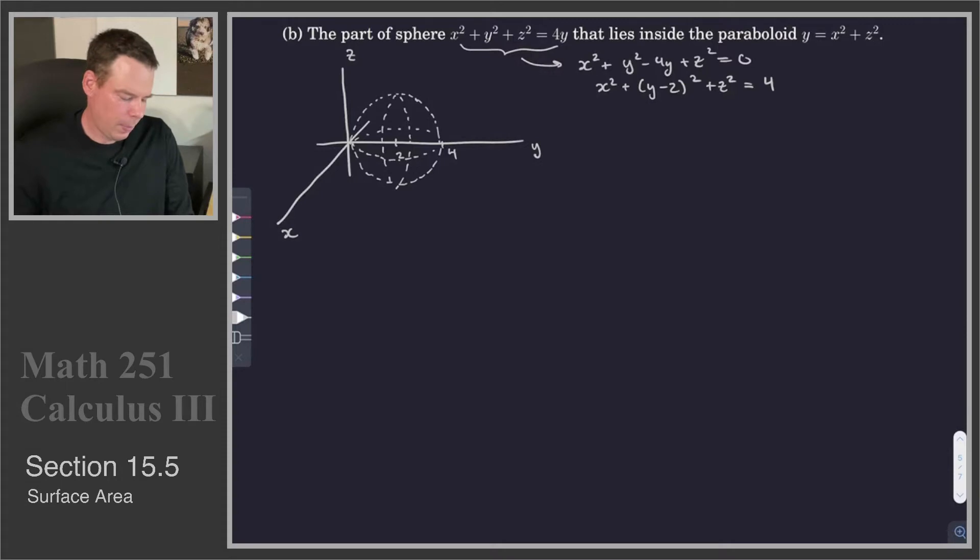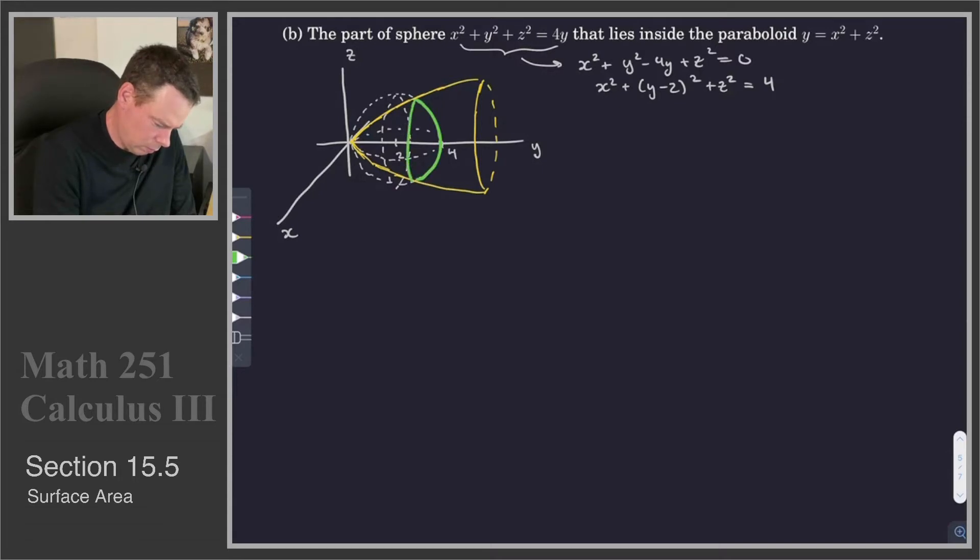Okay so there's our sphere and we're interested in the portion that lies inside this paraboloid. So this is a paraboloid that's opening around the y axis. So let's get this paraboloid sketched in here. It's going to look something like this. So there's our paraboloid. And we want the portion of the sphere that lies inside this paraboloid. So that's this portion of the sphere here. So it looks something like that. And that's what we want the surface area of.